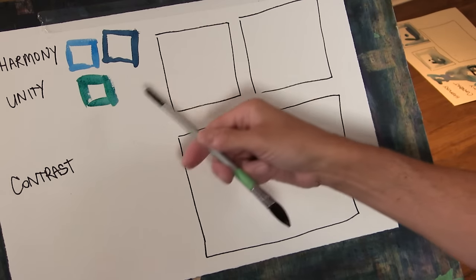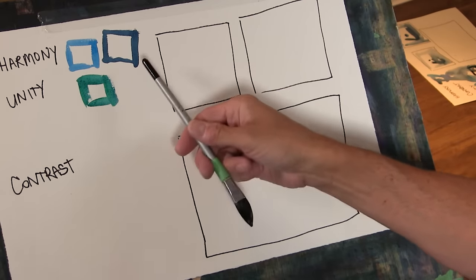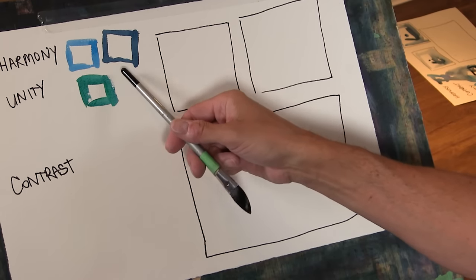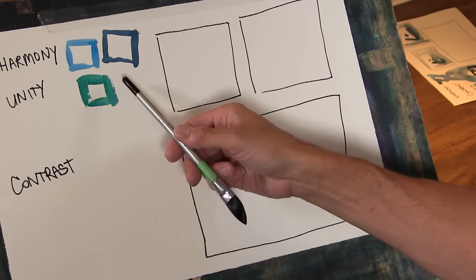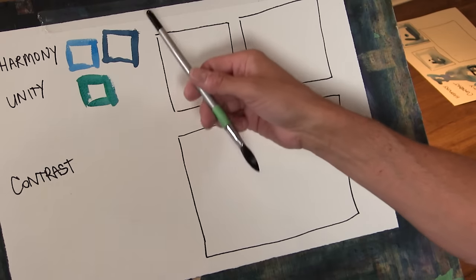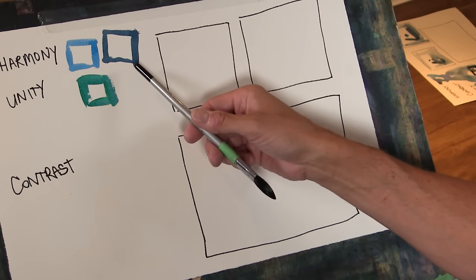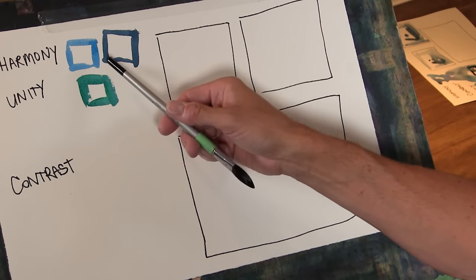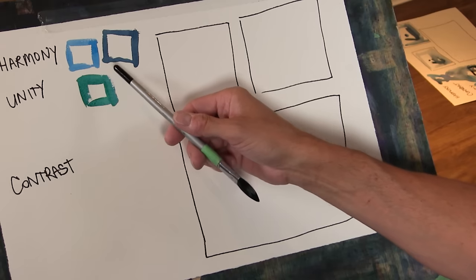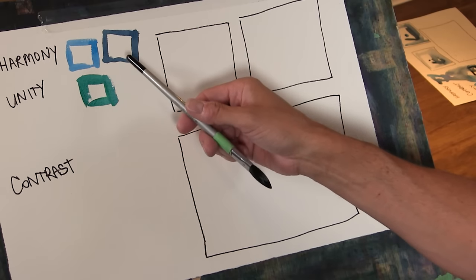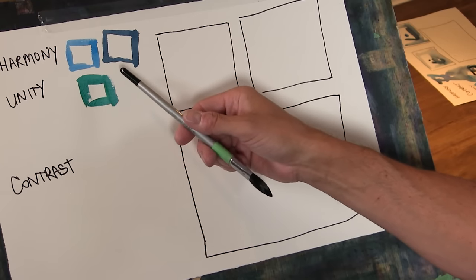These shapes are all harmonious because they're very similar in terms of the shape itself, but they're also harmonious in terms of the color because blue and green are right next to each other on the color wheel, and they're also similar to each other in value in terms of how dark they are against the white of the paper.